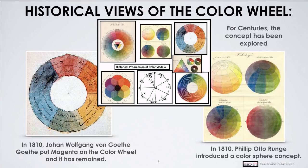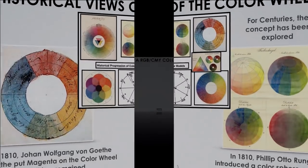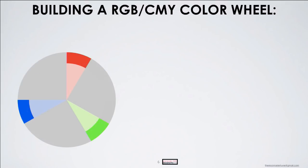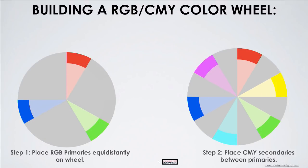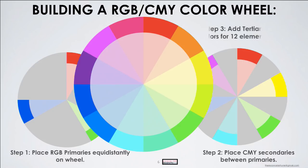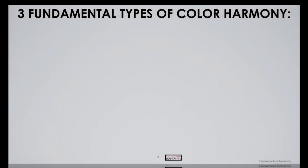The first person to do the 3D beach ball concept of color was a guy named Rung, also in 1810. Here's how we build a color wheel: you take RGB and CMYK, they oppose each other, put those together and you have a color wheel.